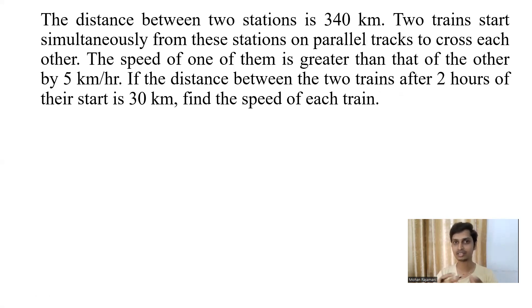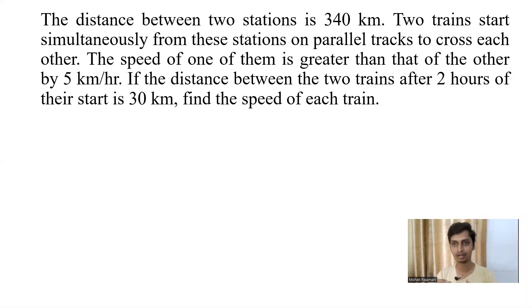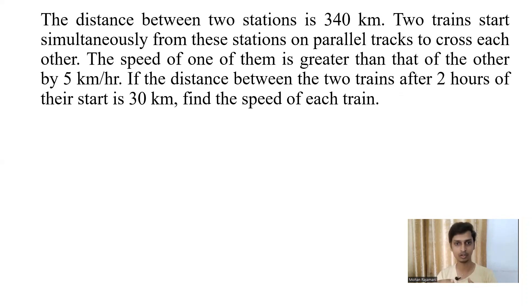You can pause this video and practice it for some time. Here is the question: the distance between two stations is 340 km. Two trains start simultaneously from the stations on parallel tracks to cross each other. The speed of one of them is greater than that of the other by 5 km per hour. If the distance between the two trains after two hours of their start is 30 km, find the speed of each train.